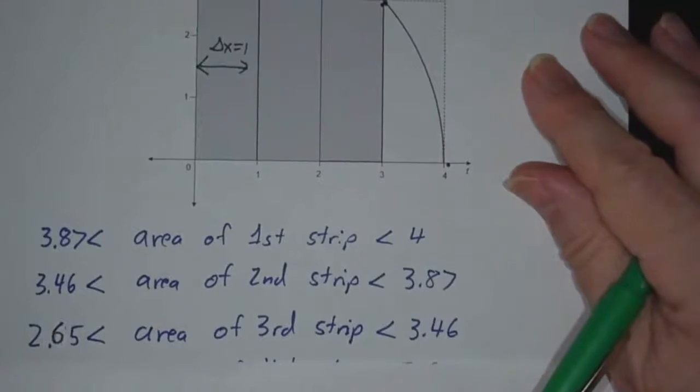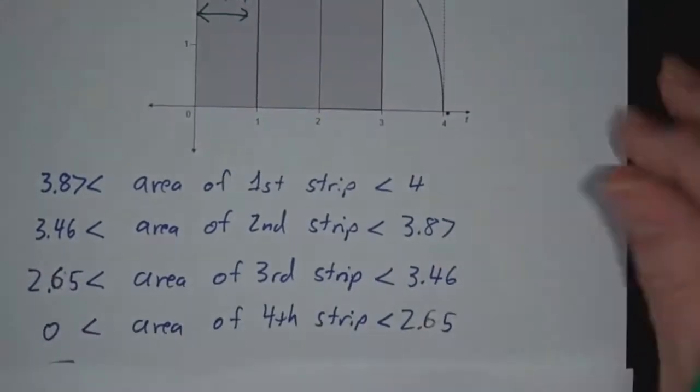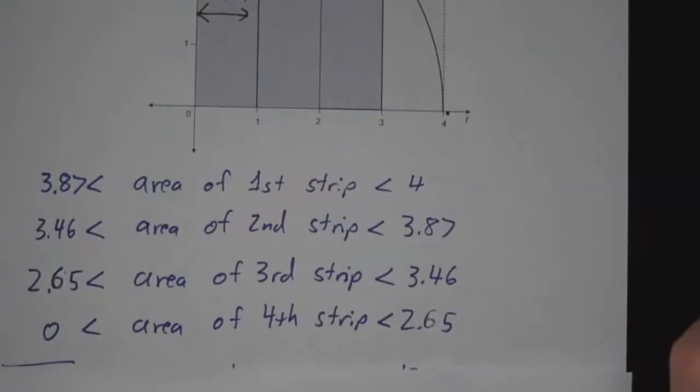The area of the third is somewhere between 2.65 and 3.46. And the area of the fourth is somewhere between 0 and 2.65.